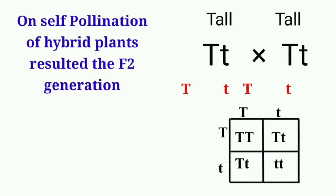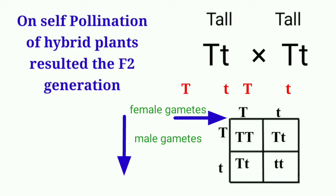These hybrid F1 plants, during gamete formation, produce two types of gametes because they bear two alleles for stem height: T and t. So 50% of the gametes will carry T and 50% will carry t. In the F1 generation, no crossing was done — the bisexual plants were allowed to self-pollinate, and these two types of gametes fused with each other.